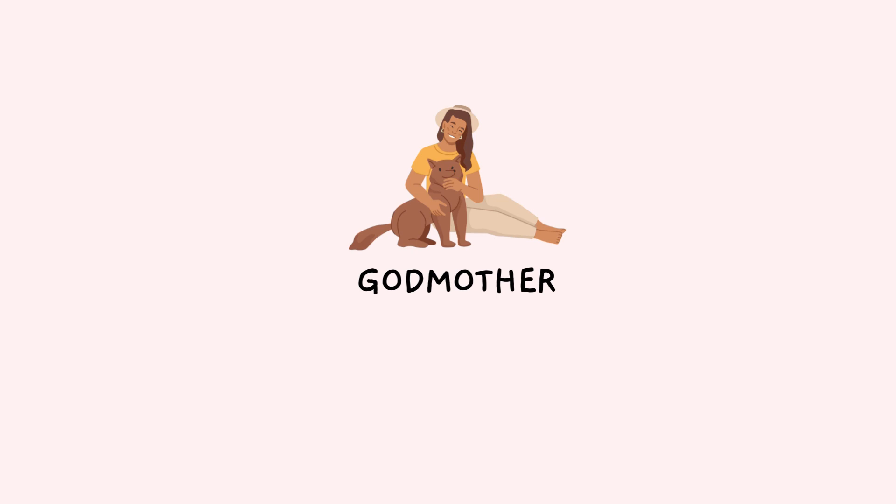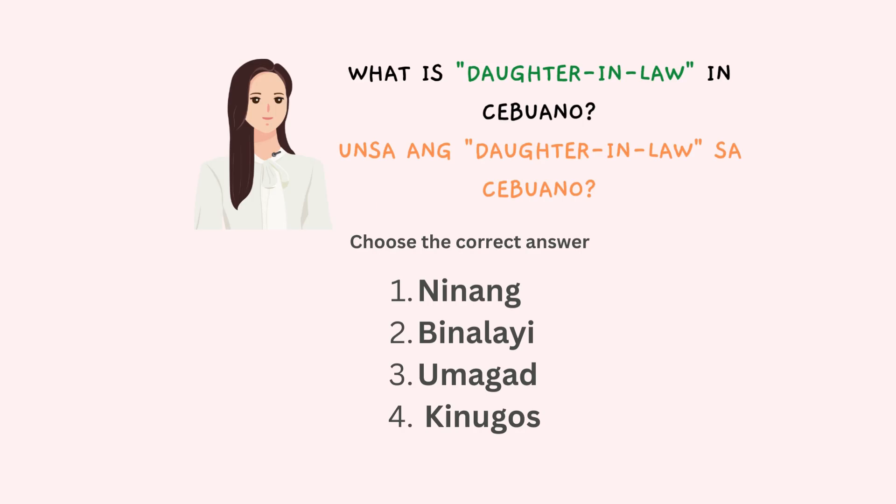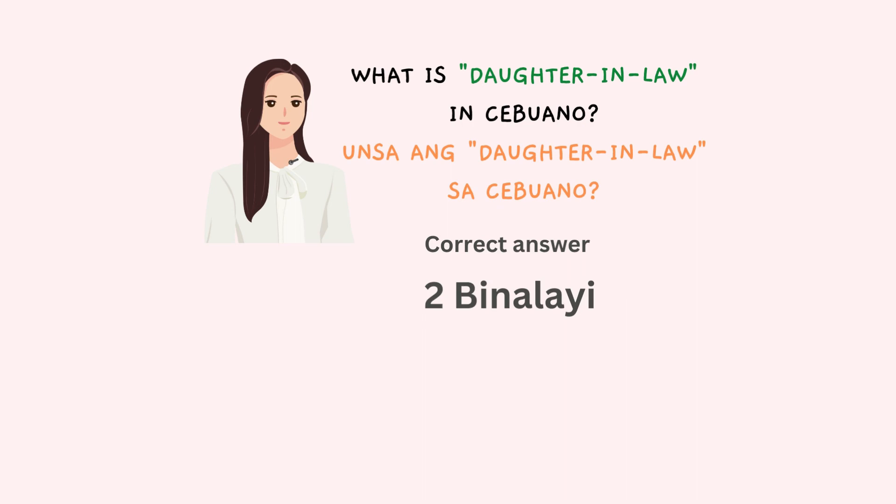Let's have a test, mga higala. What is daughter-in-law in Cebuano? Our choices are: number one, ninang; number two, binalayi; number three, umagad; number four, kinugos. The correct answer is number two — binalayi. Daughter-in-law is binalayi.